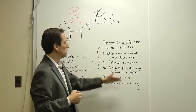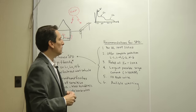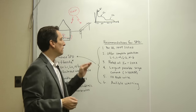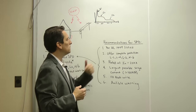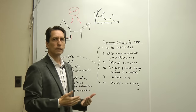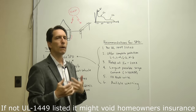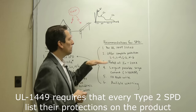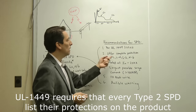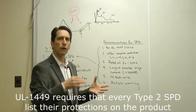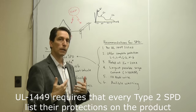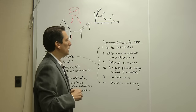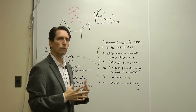I came up with six metrics that I think are important for a good whole-house surge protection device. The first is get one that's UL 1449 listed — that means it's been properly tested for safety. If you get one that's not UL 1449 listed, it might void your homeowner's warranty. Second, it has to offer complete protection for your home: line-to-line, line-to-neutral, line-to-ground, and neutral-to-ground. It has to protect all those different paths by which current could flow, because you don't know where the energy is coming in.